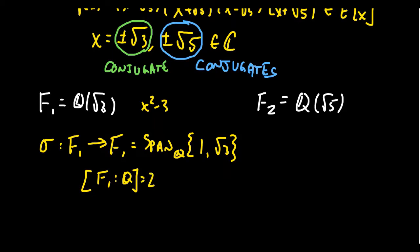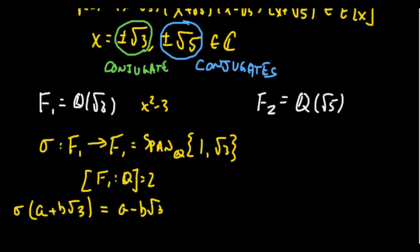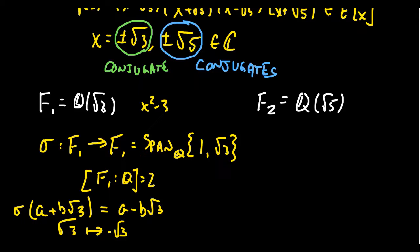There exists an automorphism σ from F1 to F1, determined by σ(a + b√3) = a - b√3. In college algebra you would call this the conjugation map — you're replacing the number with its conjugate. Essentially, this is the map that sends √3 to -√3. So there is an automorphism there.